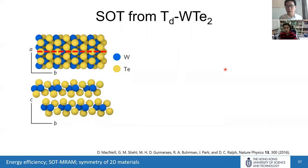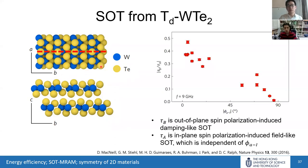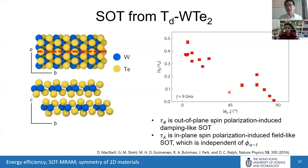People from Cornell University studied Td-phase tungsten ditelluride, which has even lower symmetry with only one mirror symmetry with respect to the BC plane, making the A-axis the low-symmetry axis and the B-axis the high-symmetry axis. Professor Daniel Ralph's group at Cornell demonstrated that applying current along the A-axis generates out-of-plane damping-like SOT, while current along the B-axis does not produce out-of-plane spin polarization, consistent with symmetry arguments. However, how to use this out-of-plane spin polarization to achieve perpendicular magnetic switching remains unexplored, and we are working on it.